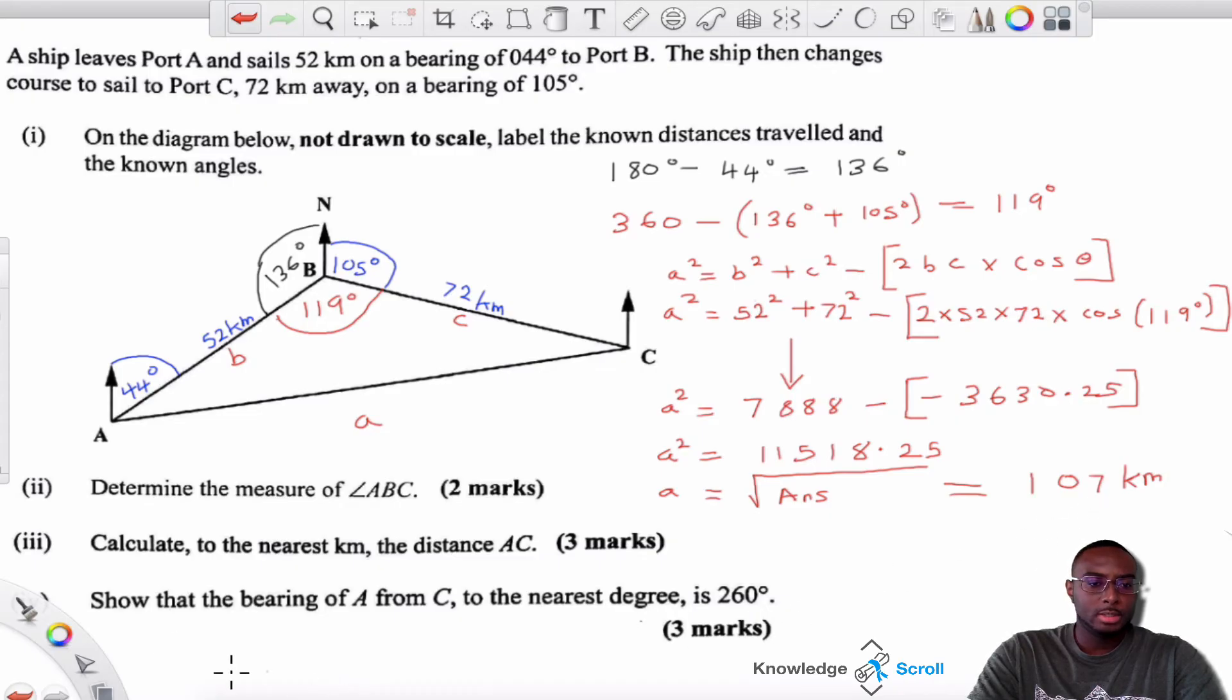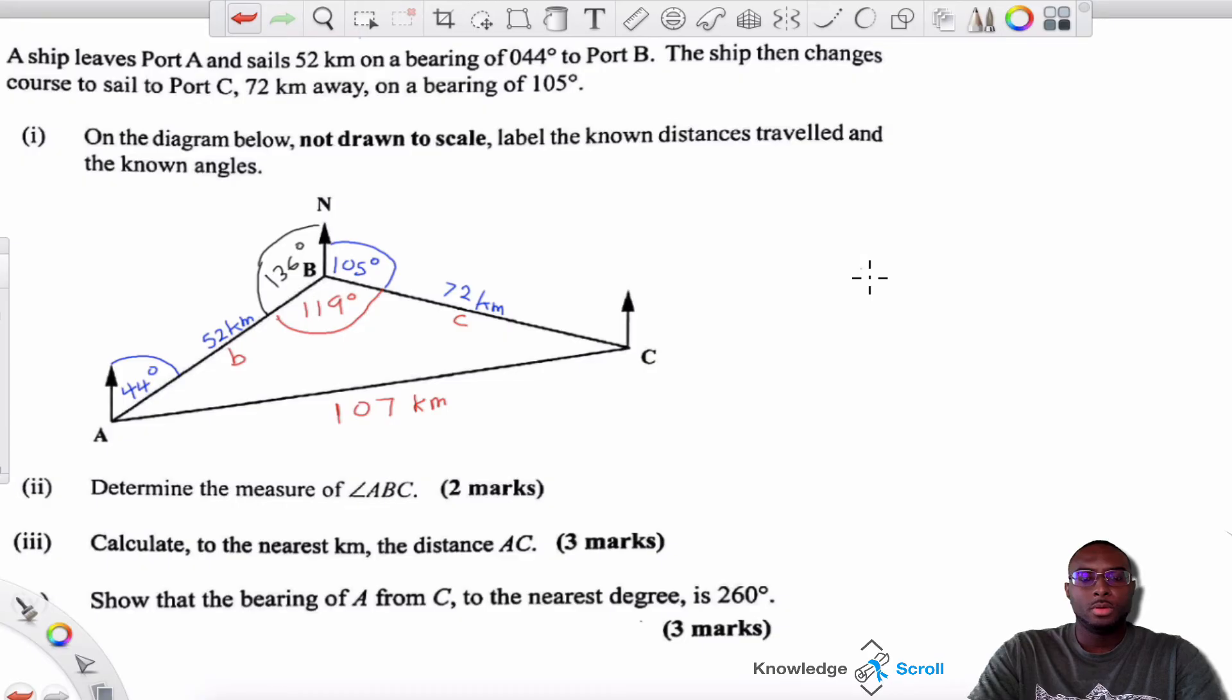Now the last question says, show that the bearing of A from C to the nearest degree is 260 degrees. I'm going to clear this part of the screen so that I can get more space for working. I'm also going to write 107 here so that we have it here for reference. So give me one moment. So the screen is clear. Let's see if we can get this figured out. So the bearing that it asking us to solve is this angle here starting at the north line. Remember the north line represents zero degrees and we're going to turn clockwise until we are in the direction of A. So we are turning all the way around until we get to this point here.